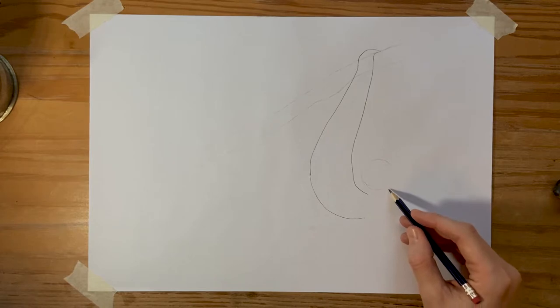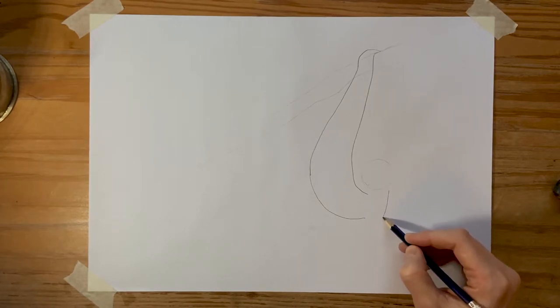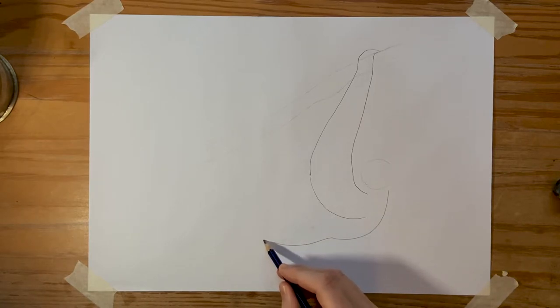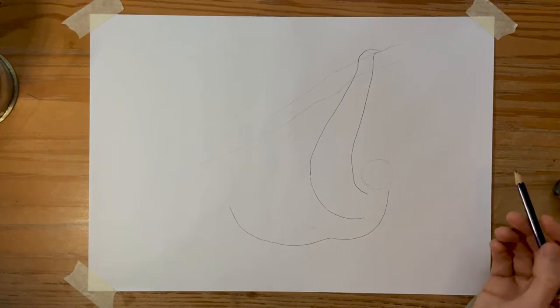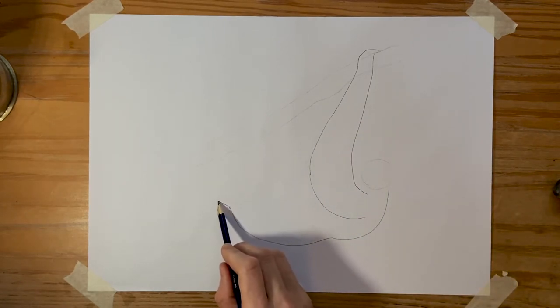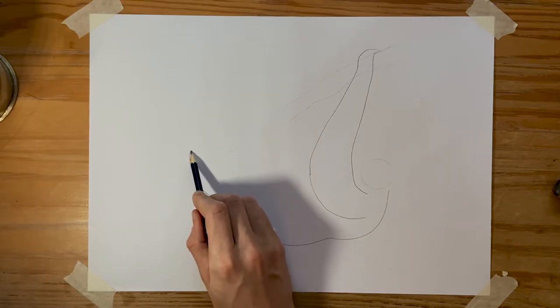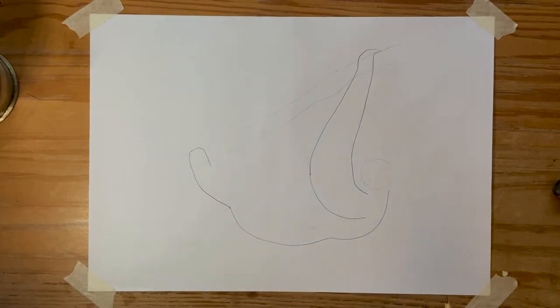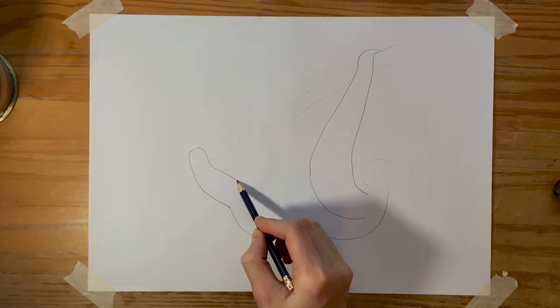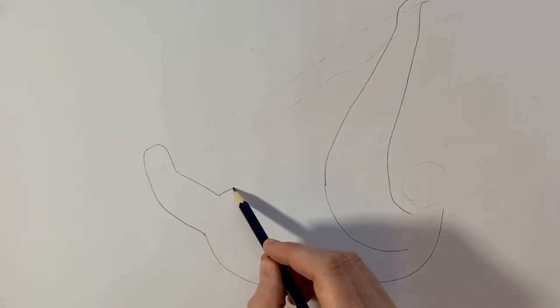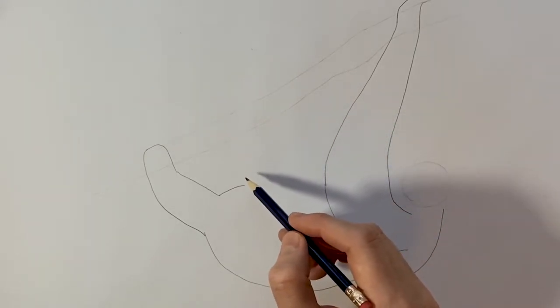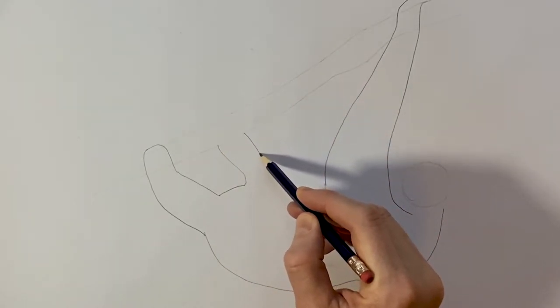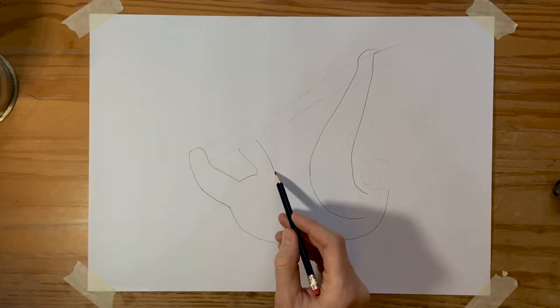Then we will just continue on the back here. We have a curve that goes this way, up here, and then another curve. And then we will draw the left leg. Continues up and around here. We are kind of grasping the branch. Continue down here and the bottom of the stomach will be a small curve. And the right leg.